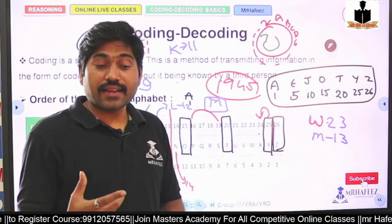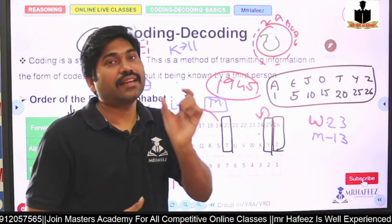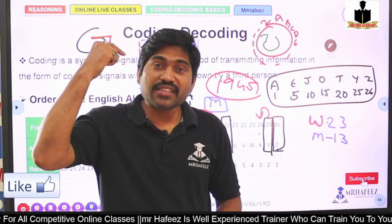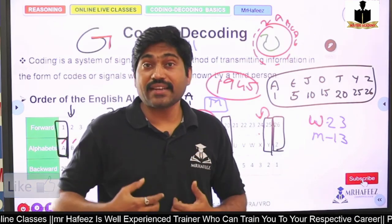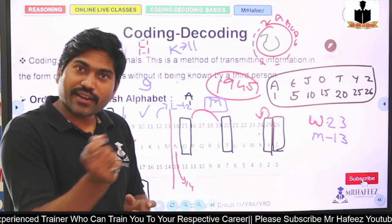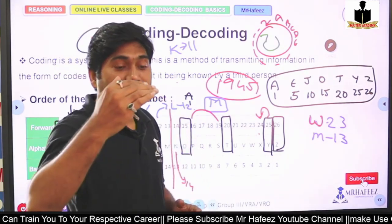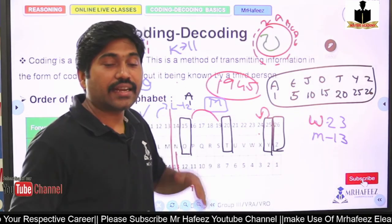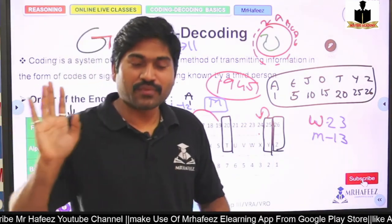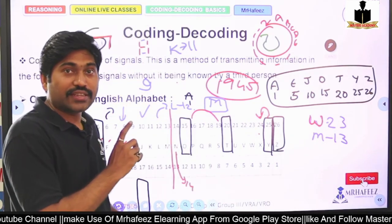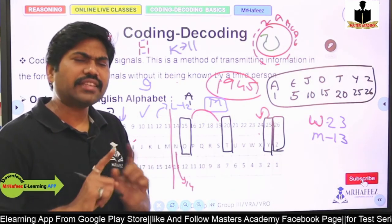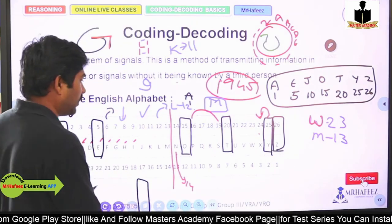My intention here is: when a number is given, the letter should come instantly, and when a letter is given, the number should come instantly — no gap, no thinking delay. You should not underestimate this. If you master these letter-number mappings, coding and decoding problems — even advanced ones — will become easy. Don't take the alphabet from A to Z lightly. This makes all the difference.